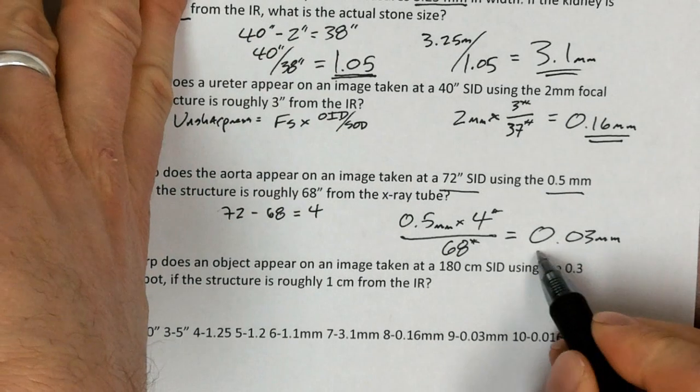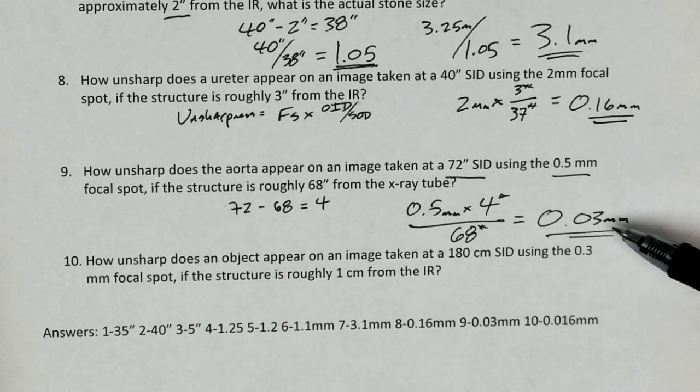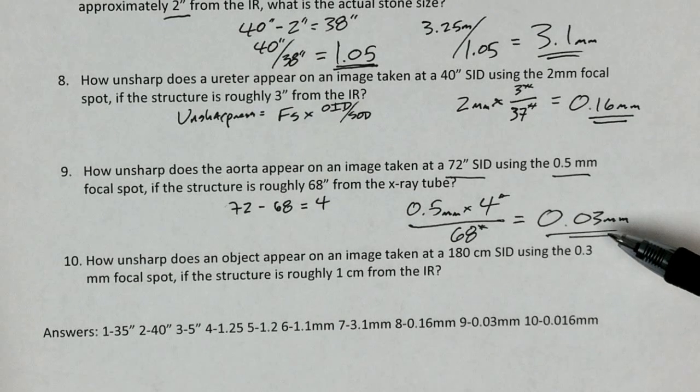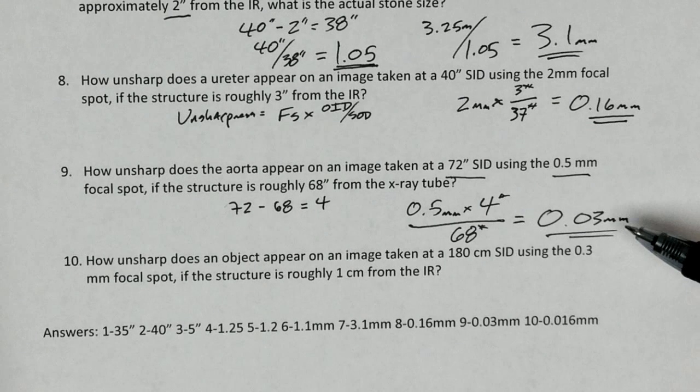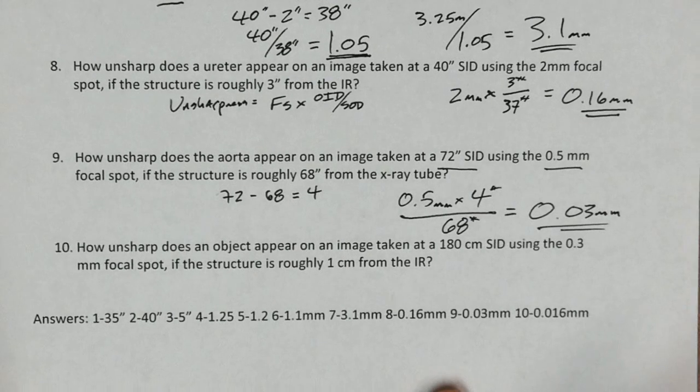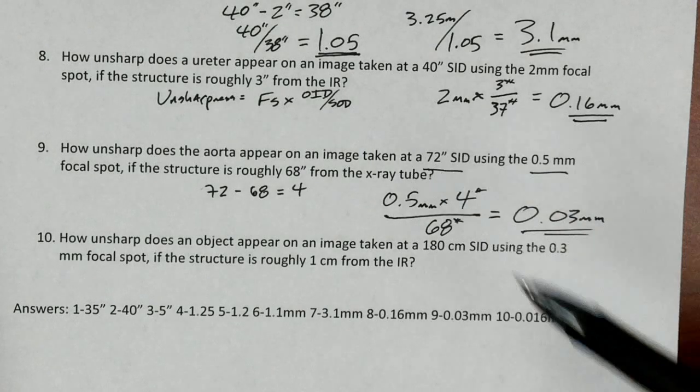Now, you'll notice this is a significantly smaller number than that other one, smaller by about half. And that means it is a much sharper image. There's less unsharpness apparent on the image. Why? Because we used a smaller focal spot size and a larger SID. Those are the ways to improve image sharpness.